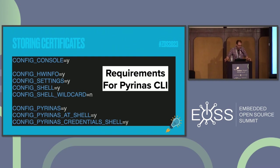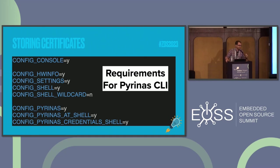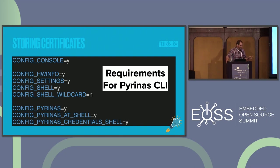So, storing certificates — there are kind of two ways of doing it. One thing you could do is put things in the settings subsystem, which is not ideal, but here you can see the hardware info module is turned on and this is what we're going to use to get the unique ID off the device. It's essentially a shell command you just run to get the device ID. We're using the shell but also turning off the wildcard, which is important for writing large strings or large payloads of data — otherwise it'll cause problems. Then turning on the custom implementation for the AT shell.